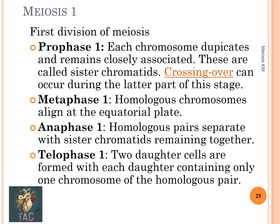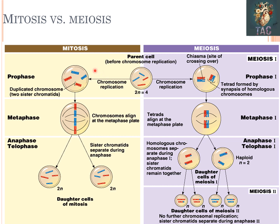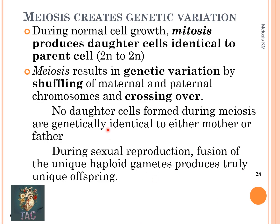In meiosis two, in prophase two there is no DNA replication. Chromosomes align at the equatorial plate in metaphase, divide and separate, and after completion of telophase, four haploid daughter cells are formed with half the number of chromosomes and half the amount of DNA. In comparison, mitosis produces two diploid daughter cells, while meiosis produces four haploid cells. Due to crossing over in meiosis one, daughter cells are genetically different from both parents.